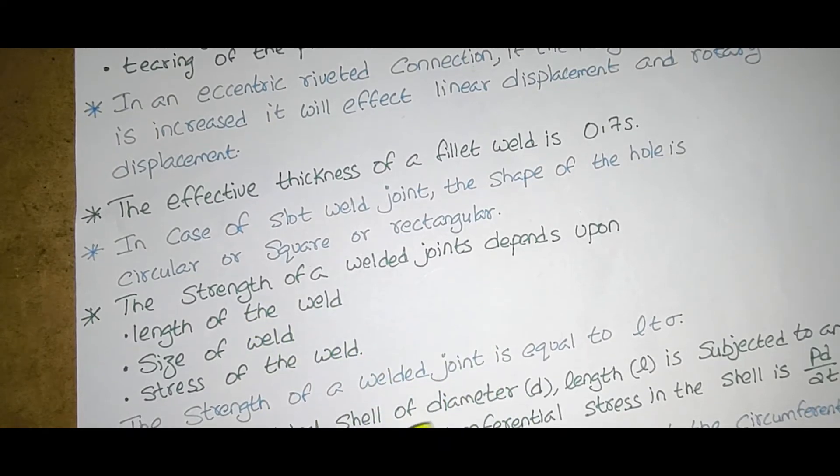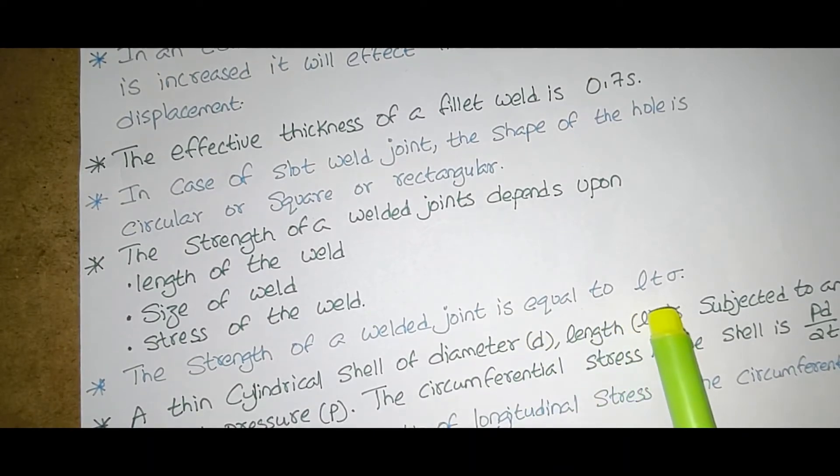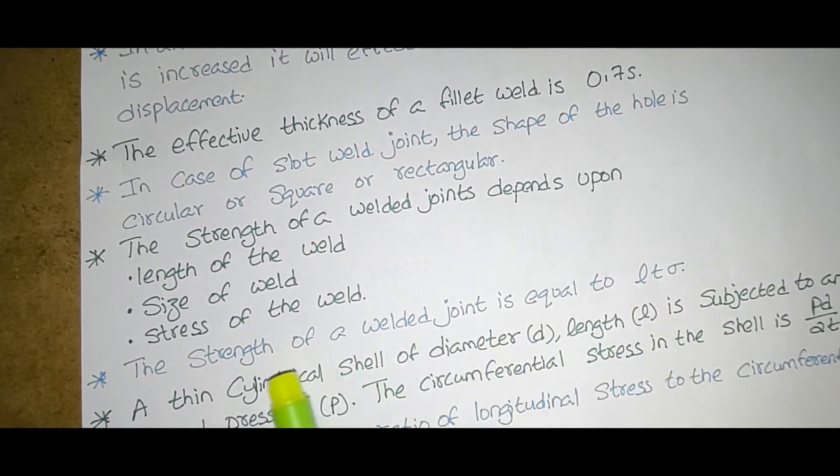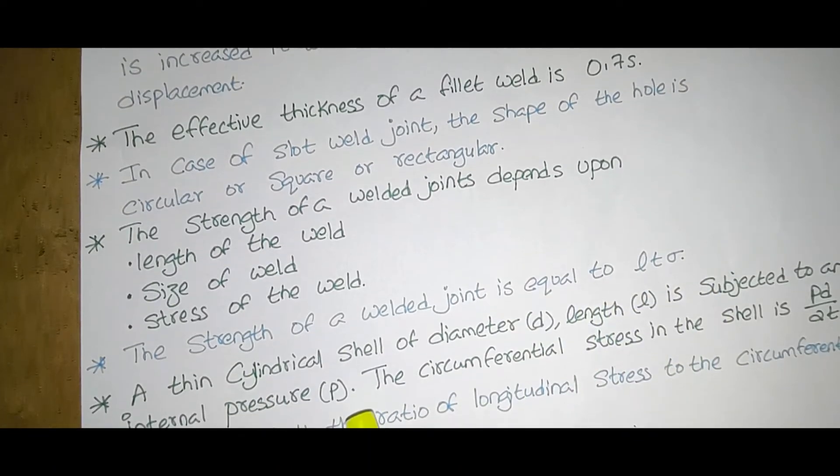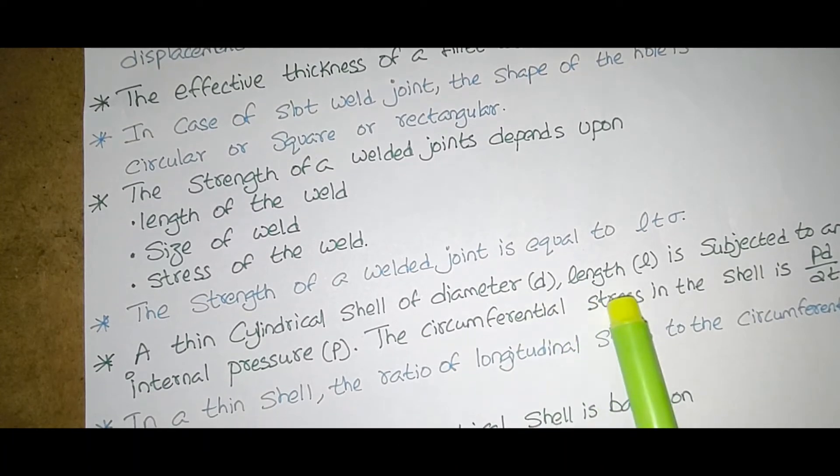The strength of a weld joint is equal to L T sigma.